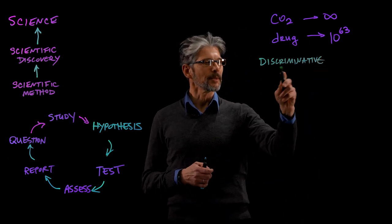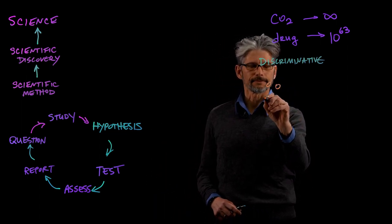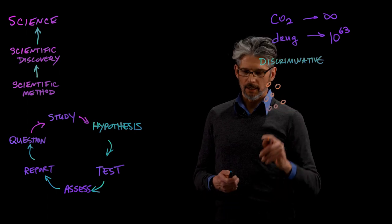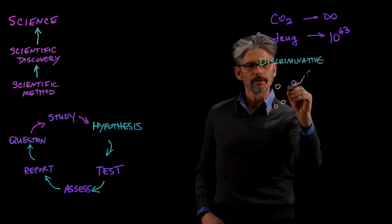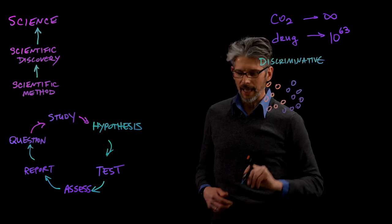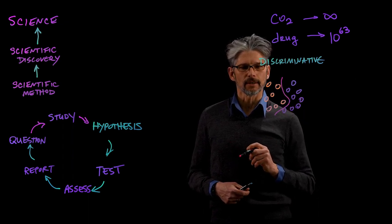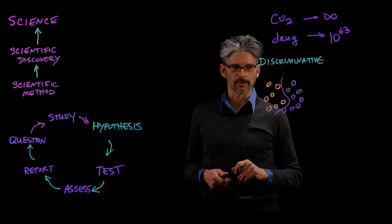Discriminative models are essentially given training data. What they learn to do is to distinguish between different classes of that training data and effectively learn a decision boundary that can tell the difference between them.